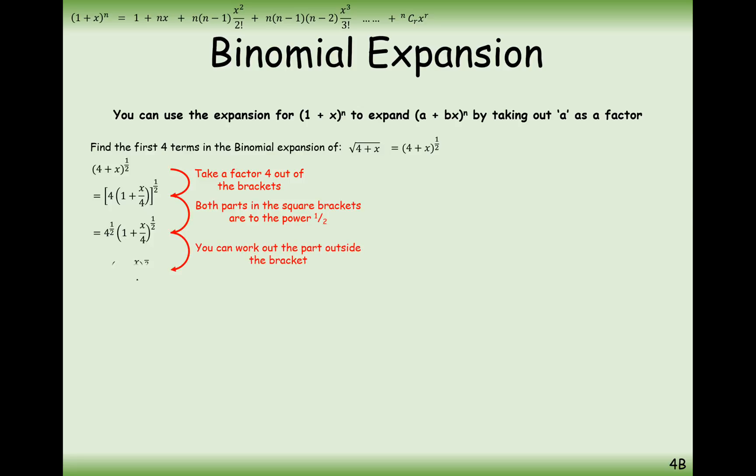So when we pull the 4 out of the bracket, we're actually pulling out 4 to the power of a half. In this case here, we square root the 4 to make it a 2. And then what we're left with inside the brackets is 1 plus x over 4 to the power of a half.